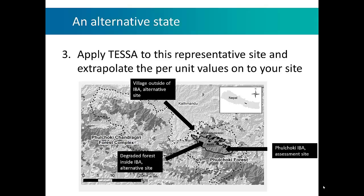This is an example from Pulchokhi forest — a community forest which is also an important bird and biodiversity area. To look at the alternative state — a combination of degraded forest and agriculture — surveys were undertaken outside of the IBA in a location already converted to agriculture, and also at a small area within the IBA where there was more degraded forest. Measurements were then taken and extrapolated back to the land cover areas shown on the pie charts.